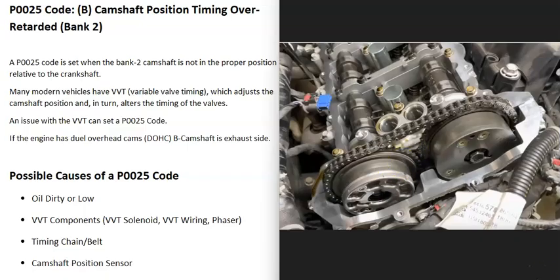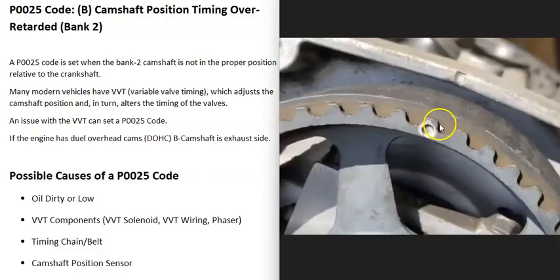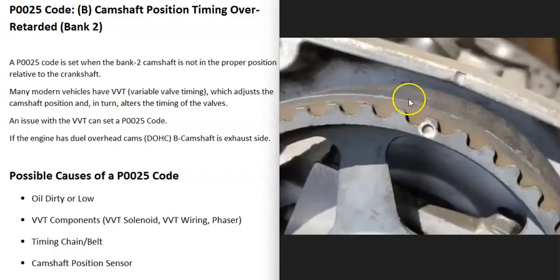You'll want to test these variable valve timing components to be sure they're good. The next possible cause is some kind of issue with the timing belt or timing chain. All timing chains and belts have timing marks that need to be lined up correctly. If these timing marks get off — for example, on the bank 2 side the timing belt slipped a little, so the mark is slightly before or after where it should be — that can cause problems and throw everything off.